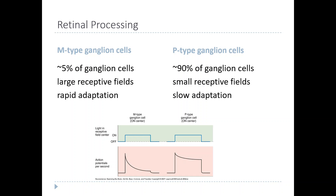Another difference is their level of adaptation. Adaptation is a property of many types of neurons in sensory systems, where they reduce their response to a constant stimulus. If you look at the response rate of an M-type ganglion cell — the action potentials per second due to the presence of light — this is an on-center cell. We're shining light in the center at a constant level, and immediately when light comes on the neuron starts firing, but then very quickly the firing rate drops down almost back to baseline.